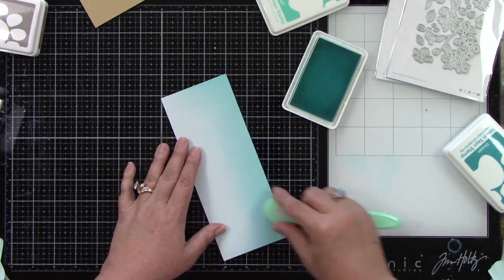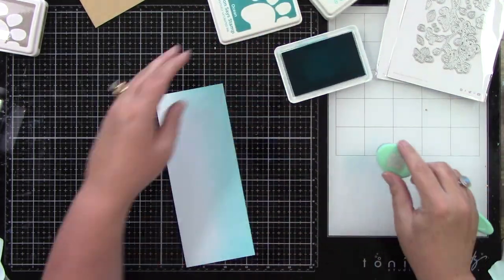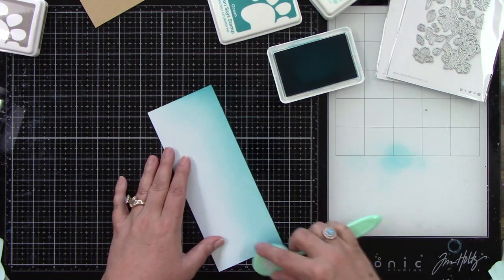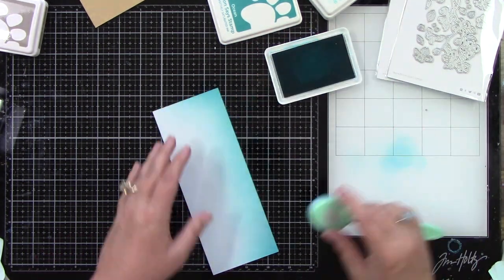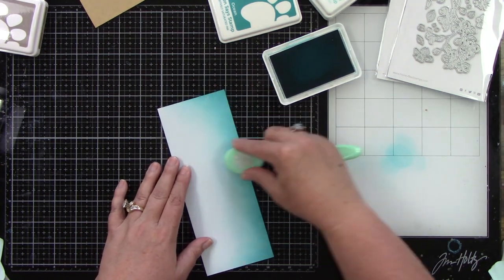I decided to do a little bit of ink blending. I'm using the polka dot side—I want this to be the sky basically for my background. I thought ink blending would add a little bit of interest, so I use Simon Says Stamp's Positively Saturated inks in Surf and Ocean and I just blended that at the bottom.